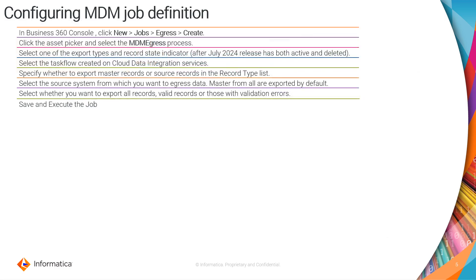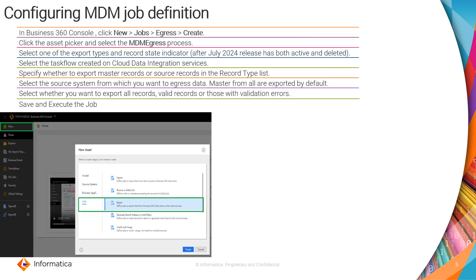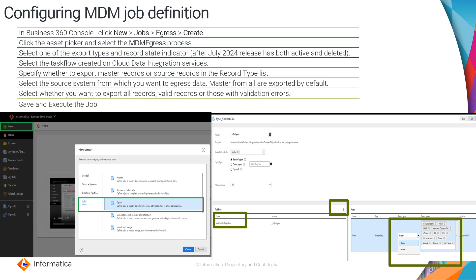After creating your mapping task and task flow, you will have to configure the MDM job definition. Go to the B360 console, click on the egress job — the process name is MDM Egress. Here you have options for choosing what record states you want to egress: valid, invalid, or both, and active, deleted, or both. You can choose to export only master data or source — which is xref data. Each job definition can only export one type, so you cannot choose both master and xref; you'd need a create a new job definition for xref. By default all source systems will be selected, so uncheck any you don't want.